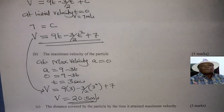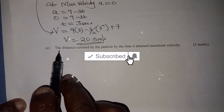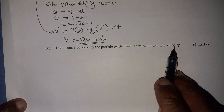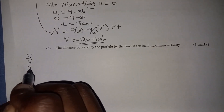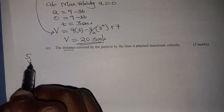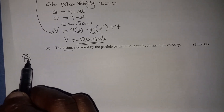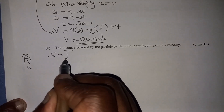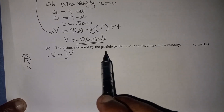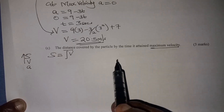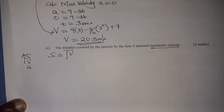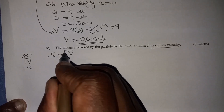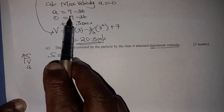That is how you work it out. For the last question, we are supposed to find the distance covered by the particle by the time it attained maximum velocity. We have S, V, and A — and since we have velocity and need distance, that is upward movement, so we integrate. Distance is obtained by integrating velocity. Since maximum velocity was attained at t equals 3 seconds, the particle moved from 0 to 3 seconds, so the limits of integration are 0 to 3.